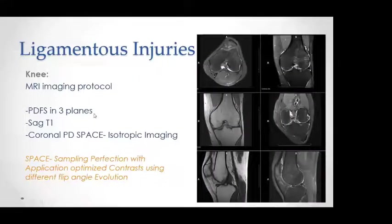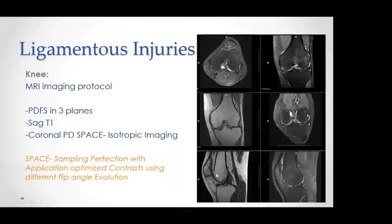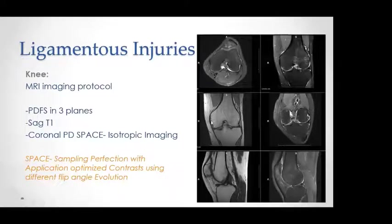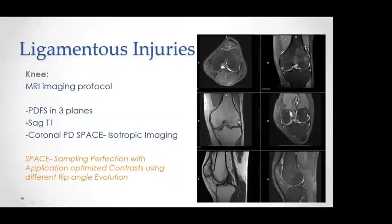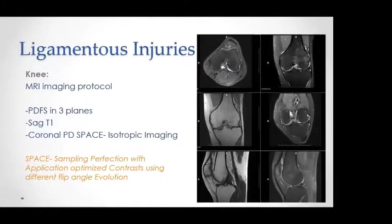The knee MRI protocol uses PDFS in three planes — axial, coronal, and sagittal — plus sagittal T1, coronal PD space for isotropic imaging enabling multi-planar reconstruction. This is widely used in North America. This protocol covers routine knee pathology including meniscal tears, ligamentous tears, and cartilage problems.